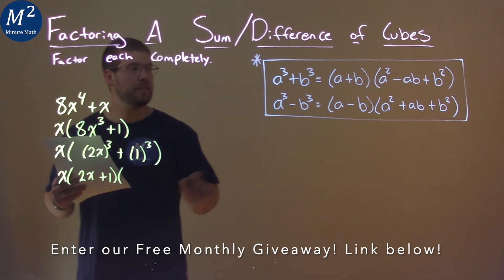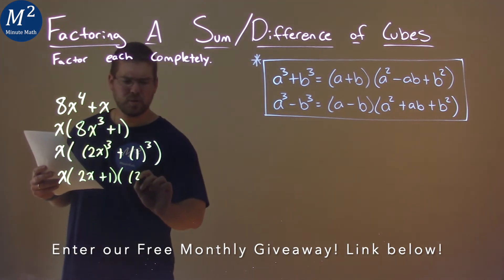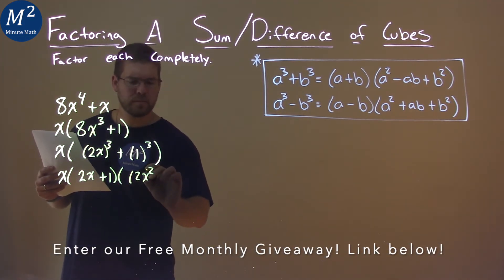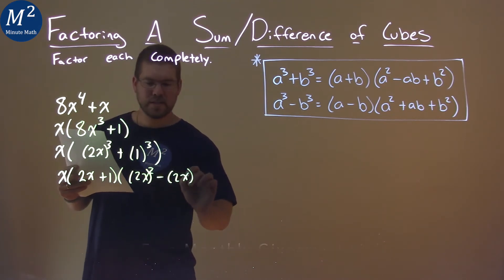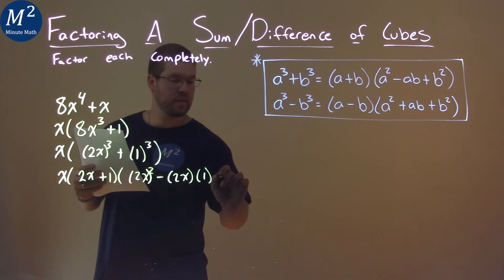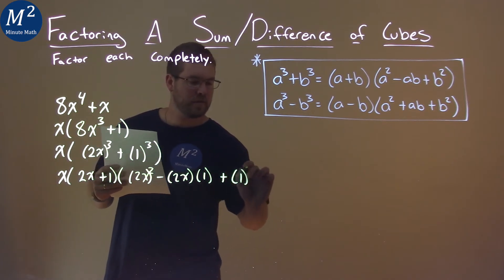Another parenthesis here, a squared, so 2x all squared, don't forget the parenthesis there, so 2x all squared, minus 2x times our b value, which is 1, plus 1 squared.